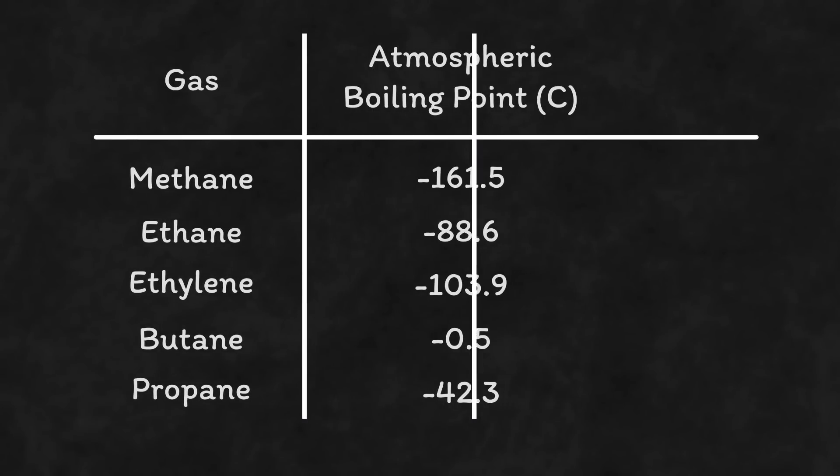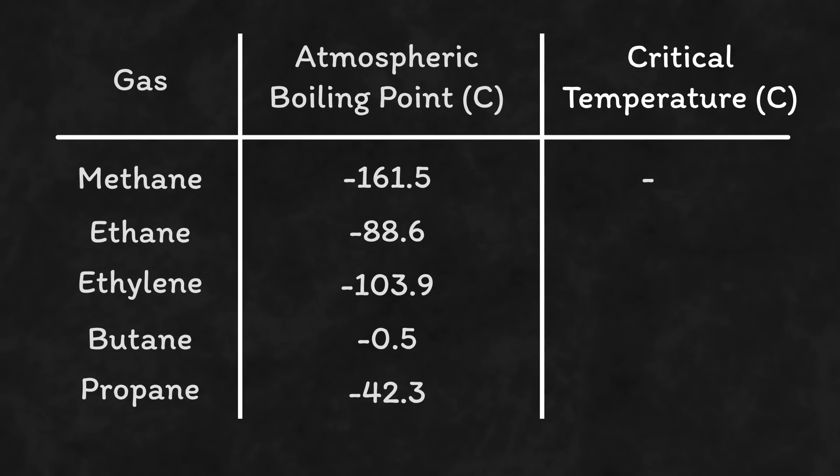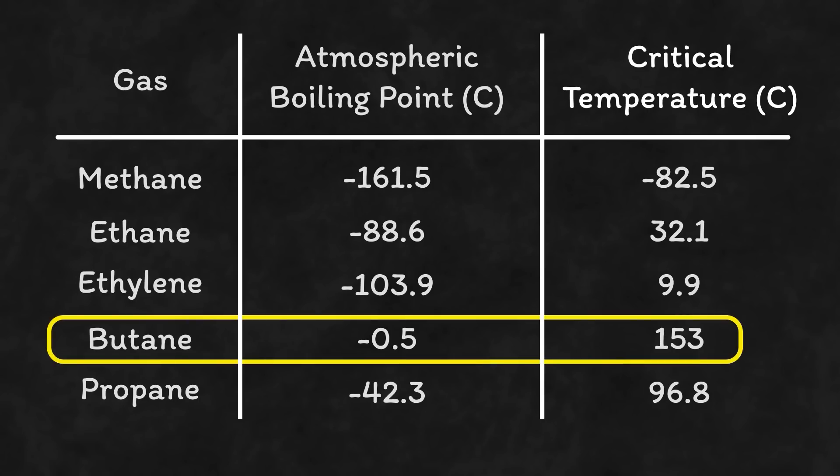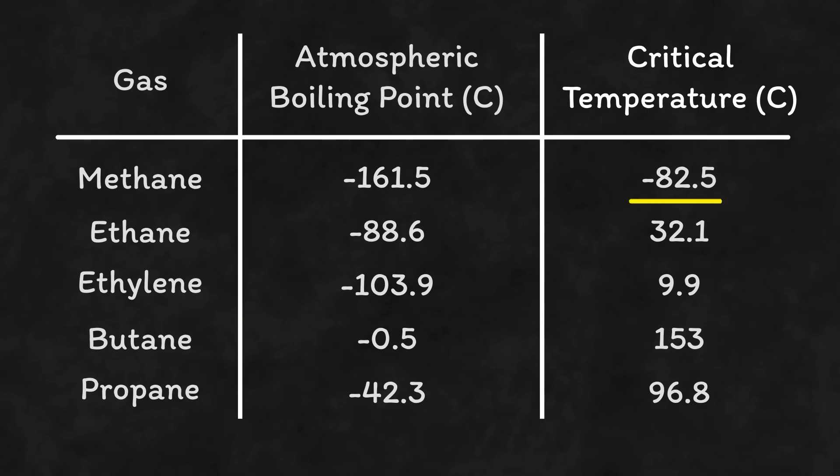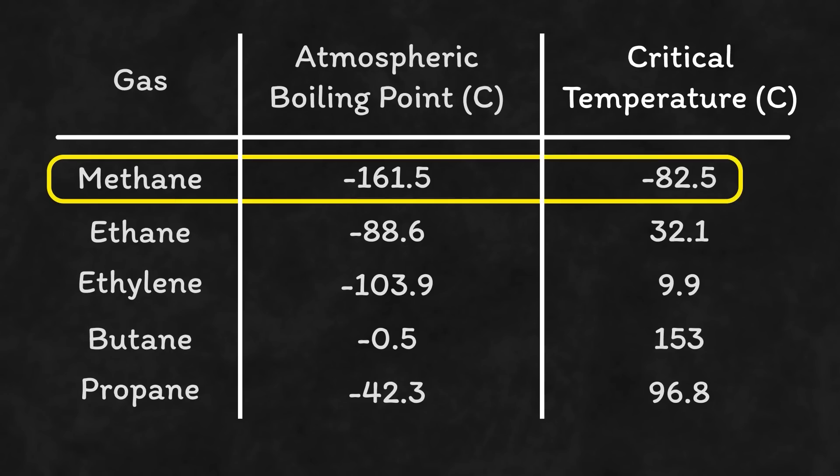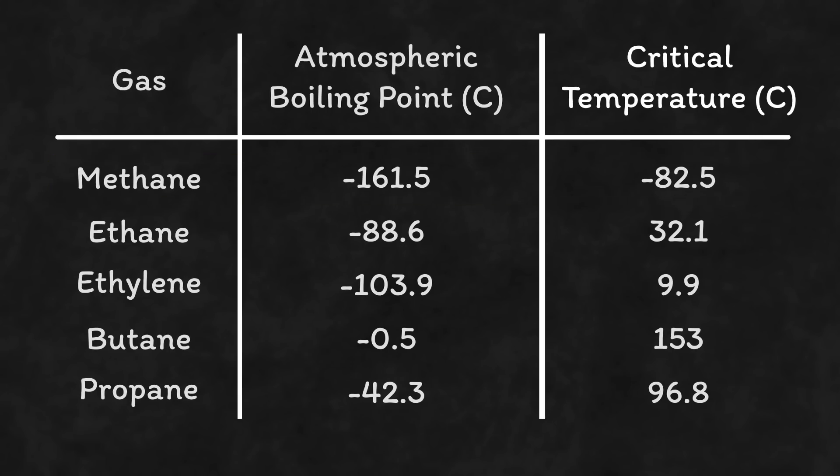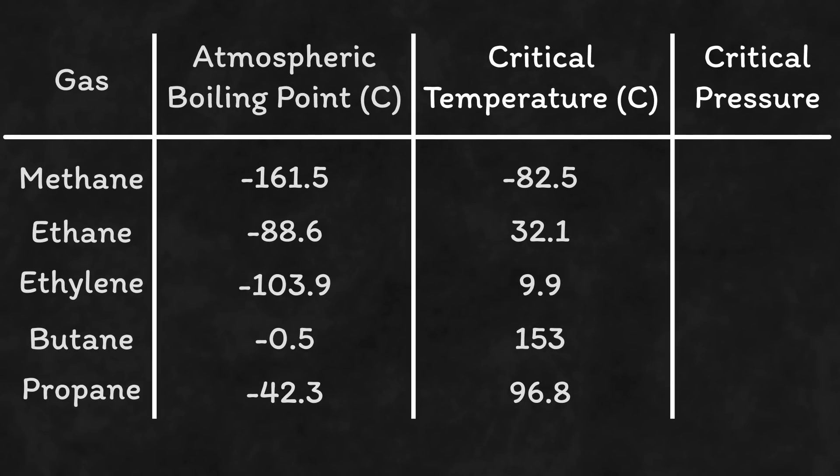This is known as the critical temperature and it varies by product from minus 82 and a half degrees for methane right the way through to 153 degrees for butane. In other words we can say that as long as your methane is at a temperature of less than minus 82 and a half degrees then it's possible to contain in liquid form using pressure alone. Incidentally the pressure needed to contain each gas at its critical temperature is known as the critical pressure. For methane this is 44.7 bar and the rest we can note down similarly.